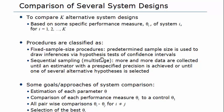These procedures can be classified as either fixed sample size procedures, or sequential sampling — also called multi-stage procedures. In the first type, a predetermined sample size, that is a run length or number of replications, is used to draw inference by hypothesis test or confidence intervals.